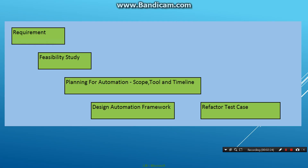Then there is technical feasibility. A company might currently have certain tools, and the application which needs to be tested would be built on certain technology. A study is done to check whether the automation tool works well with the application under test. If it doesn't, what other tools are available, and whether they have people to work with those tools — those kinds of aspects are studied.